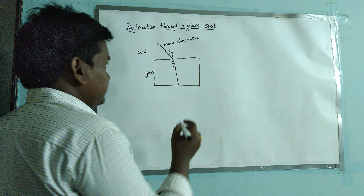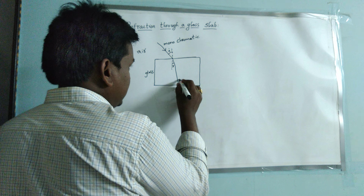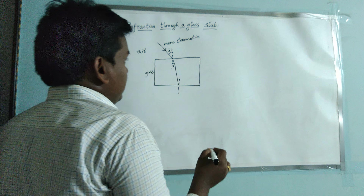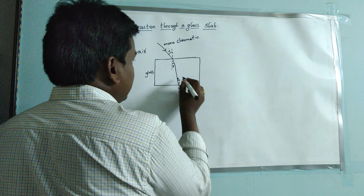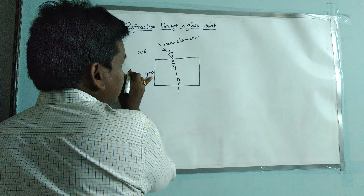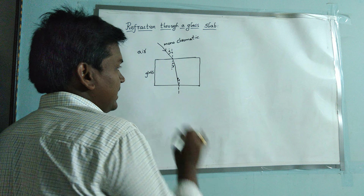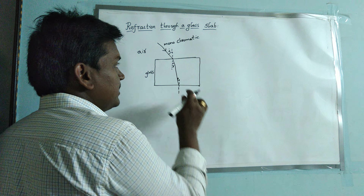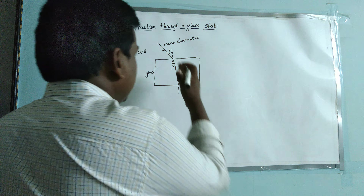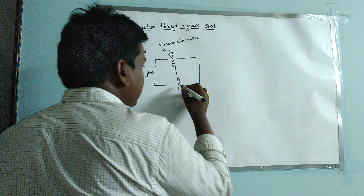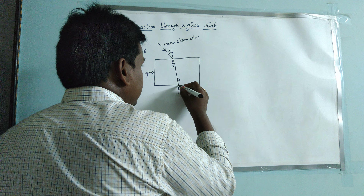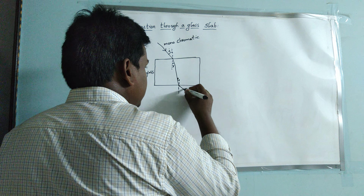Now the light ray has to come out. Here is another normal to the second surface. There is refraction at this surface too. When the ray is coming out, this is the denser medium and this is the rarer medium. So the light ray is travelling from optically denser to rarer medium, and it has to bend away from the normal. Towards the normal at the first surface, and away from the normal at the second surface.